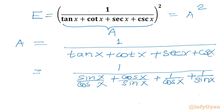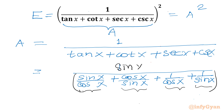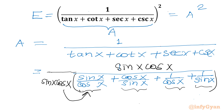Now if you notice the denominators: cos x, sin x, cos x, sin x. So let's multiply our numerator and denominator by sin x cos x. Once I multiply, for the first term cos x cancels out leaving sin² x; for the second term sin x cancels out leaving cos² x; for the third term cos x cancels leaving sin x; and for the fourth term sin x cancels leaving cos x.